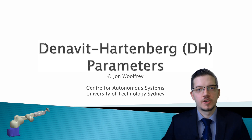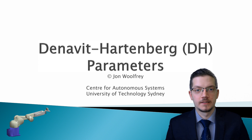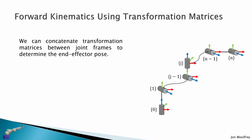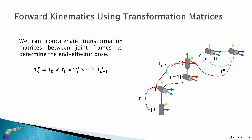Hello everyone. In this lecture we are continuing with our study on forward kinematics and we're going to introduce a powerful method for deriving this called the Denavit-Hartenberg parameters. In the previous lecture we learned that we can concatenate transformation matrices between joint frames to determine the end effector pose, multiplying all the transforms from frame 0 upward through our forward kinematic chain to the end effector of the robot.